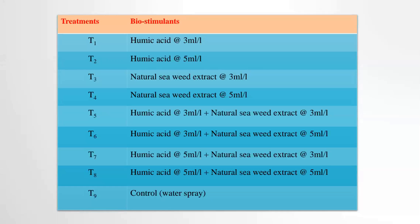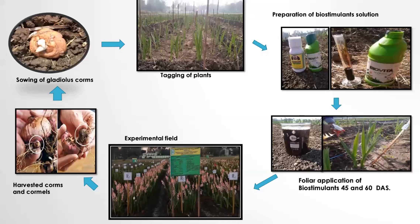T3 and T4 use natural seaweed extract at 3 ml and 5 ml per liter. T5 through T8 use combinations of humic acid and natural seaweed extract: T5 is humic acid 3 ml + seaweed 3 ml per liter; T6 is humic acid 3 ml + seaweed 5 ml; T7 is humic acid 5 ml + seaweed 3 ml; T8 is humic acid 5 ml + seaweed 5 ml per liter.